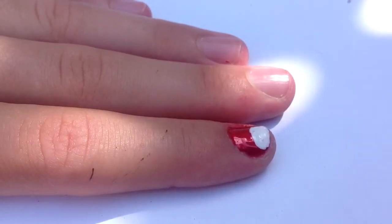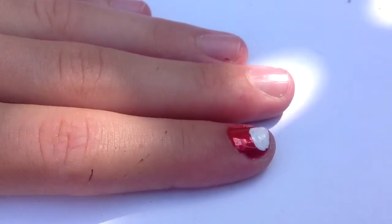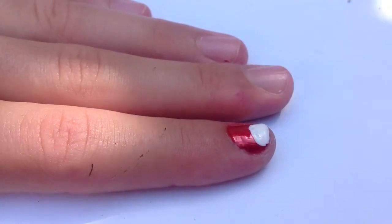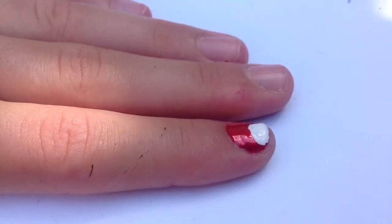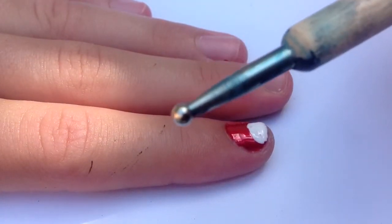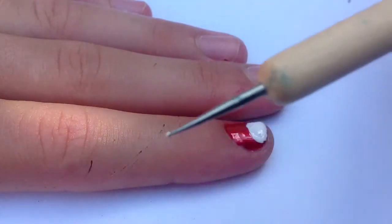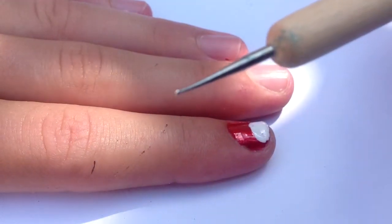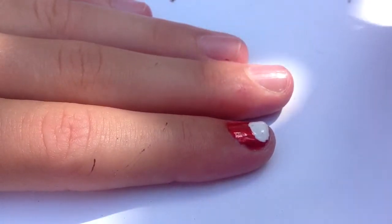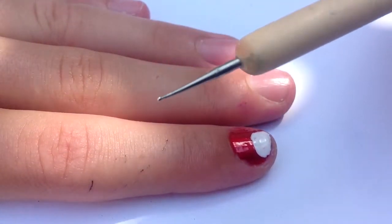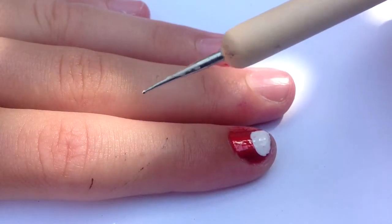Okay, now I'm gonna take a dotting tool. If you just look up nail art dotting tools, they'll show you how to make a dotting tool at home. We happen to order one online. We have a big one I'm gonna use for ears, and a really tiny one that I'm gonna use for the eyes and the nose. If you guys want, we can show you how to make the dotting tools, otherwise you can look it up on YouTube.